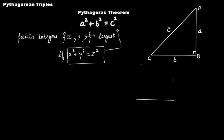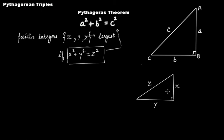It's a rough diagram so please ignore the lengths here. Let's say this is z, this is x, and this is y. So if the condition x squared plus y squared equals z squared gets satisfied, it is pointing towards the Pythagoras theorem — it means these are the three lengths of the sides of a right-angled triangle. That is why Pythagorean triples and Pythagoras theorem are closely related, and we call this set {x, y, z} Pythagorean triples.